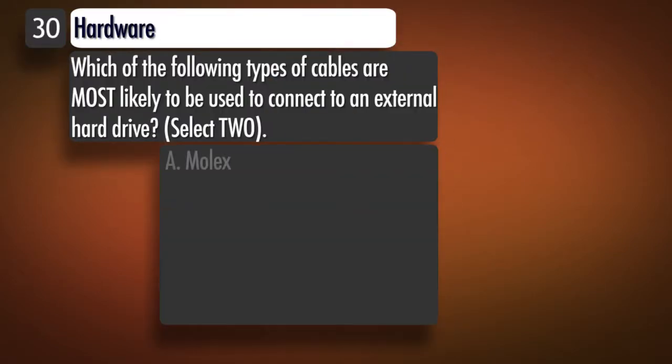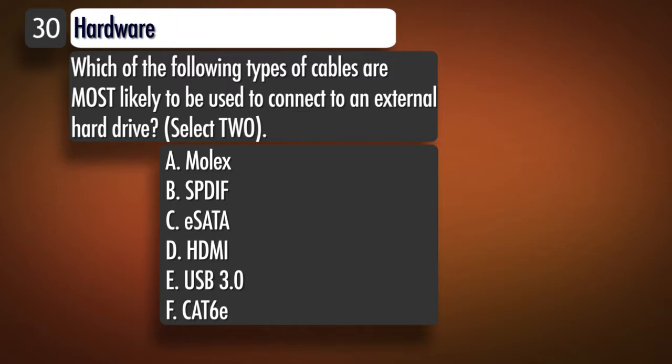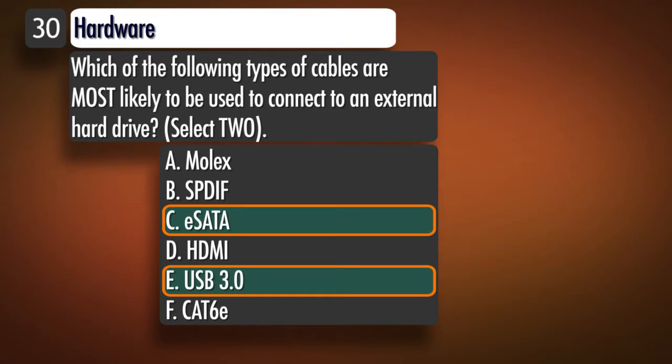Question 30, Topic 1. Which of the following types of cables are most likely to be used to connect to an external hard drive? Select 2. A. Molex B. SPDIF C. E-SATA D. HDMI E. USB 3.0 F. CAT 6E. Correct answer: C and E.